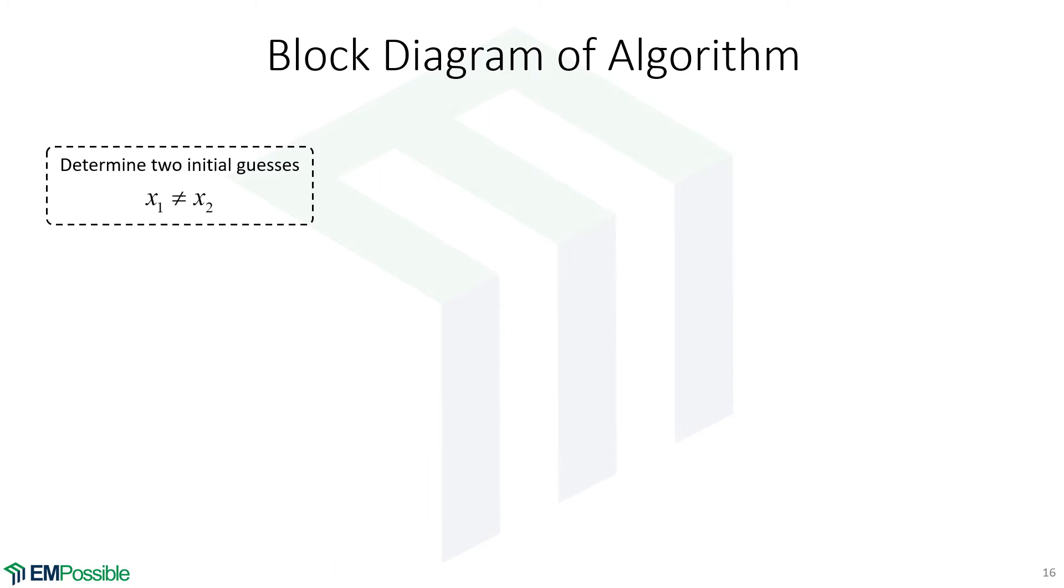We have to come up with two initial guesses that are hopefully as close to the root as possible. And they don't all have to be on one side of it. They can span it or all be on one side. Just x1 cannot equal x2. And we'd like to get that as close to the root as possible.